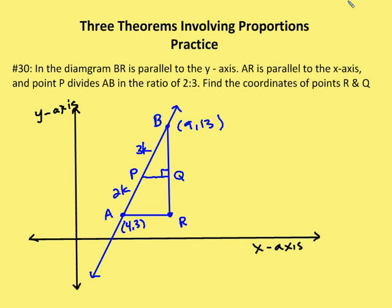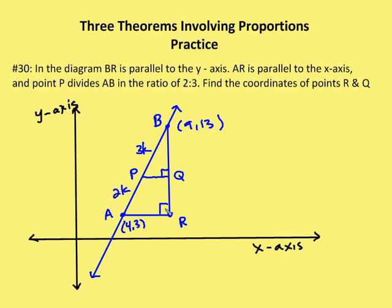Problem number 30: We're given a triangle where BR is parallel to the y-axis, AR is parallel to the x-axis, and point P divides AB in the ratio 2 to 3. We need to find the coordinates of R and Q. Since BR is parallel to the y-axis and AR is parallel to the x-axis, angle R is a right angle. Point R contains the same y-coordinate as A and the same x-coordinate as B, so by observation R is at (9, 3).